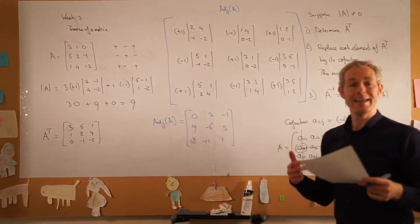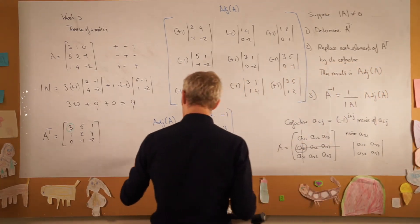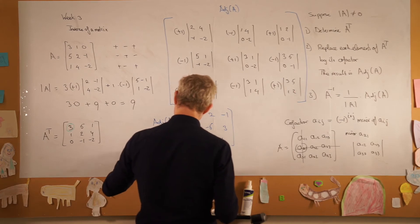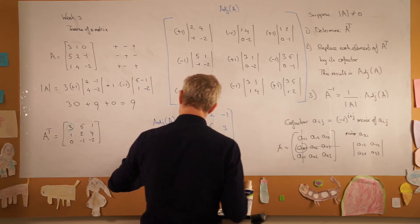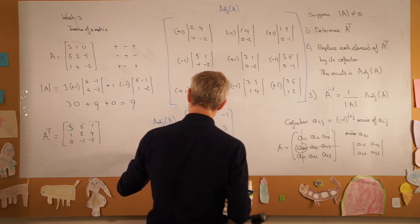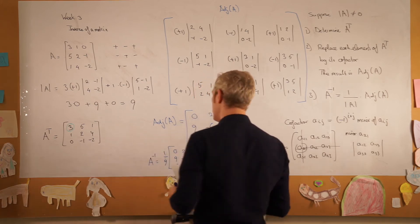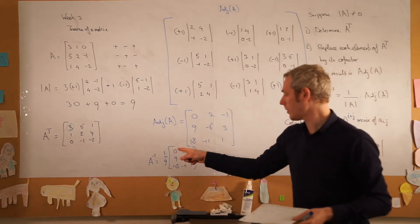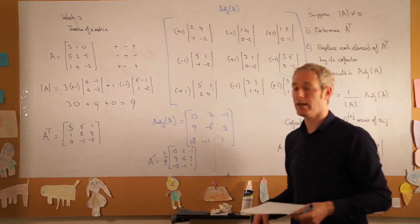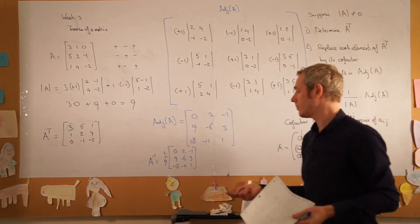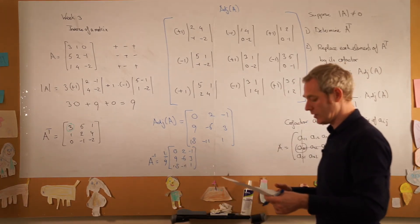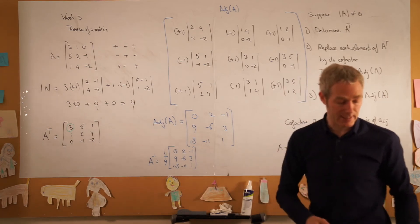The inverse matrix of A is then 1 over 9 times the adjoined matrix: 0, 2, minus 1, 9, minus 6, 3, 18, minus 11, and 1. If you want, you can multiply all these elements by 1 over 9, but for now it's easier to just leave it as is.